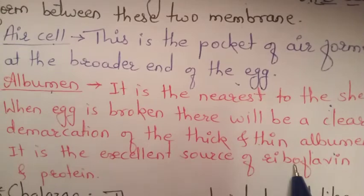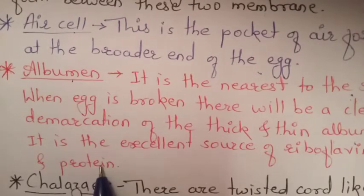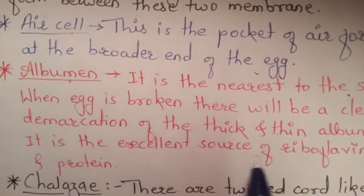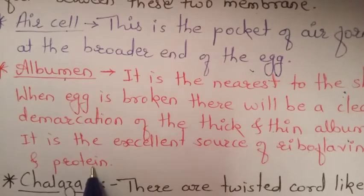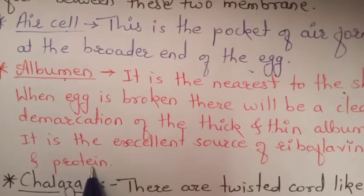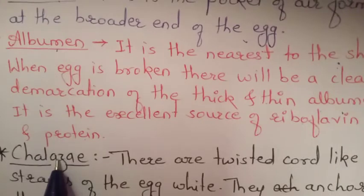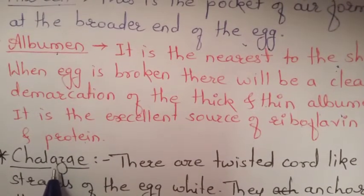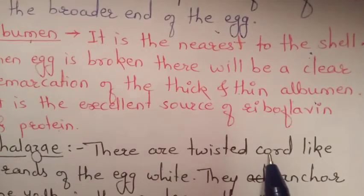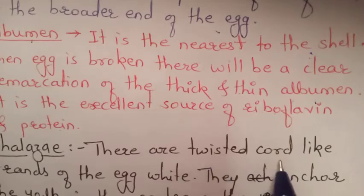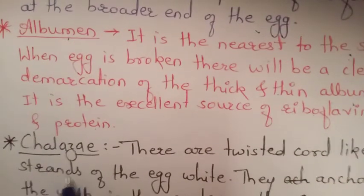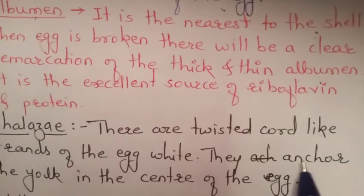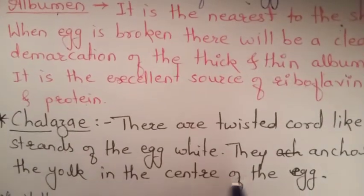The albumen is an excellent source of riboflavin and protein — we have this white portion, the egg white. It is known as chalaza. There are twisted cord-like strands of the egg.